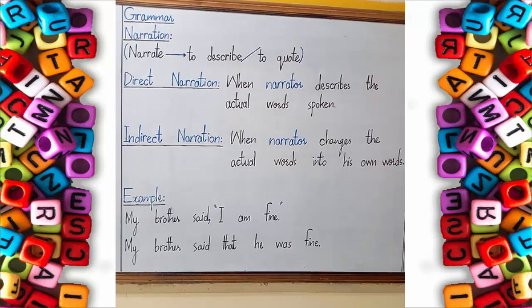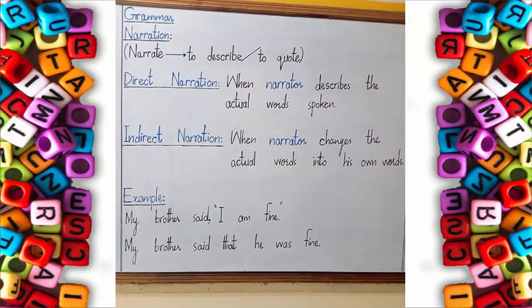The next sentence written on the board is: 'My brother said that he was fine.' When I told you to repeat the sentence but in your own words, you said, 'My brother said that he was fine.' So you understand the difference between 'My brother said, I am fine' — direct narration — and 'My brother said that he was fine' — indirect narration, where you made changes to the actual words in your own words.